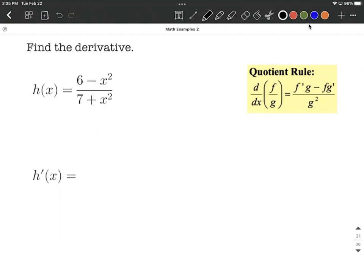So in this case, using the quotient rule, I always suggest just get used to it by labeling each of the pieces. So the numerator is going to be referred to as f, and the denominator is going to be g.